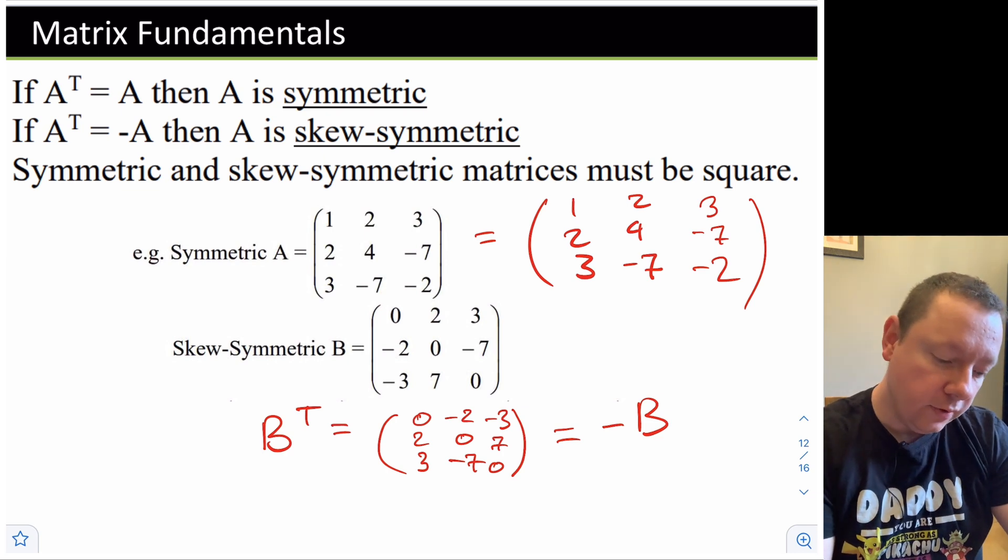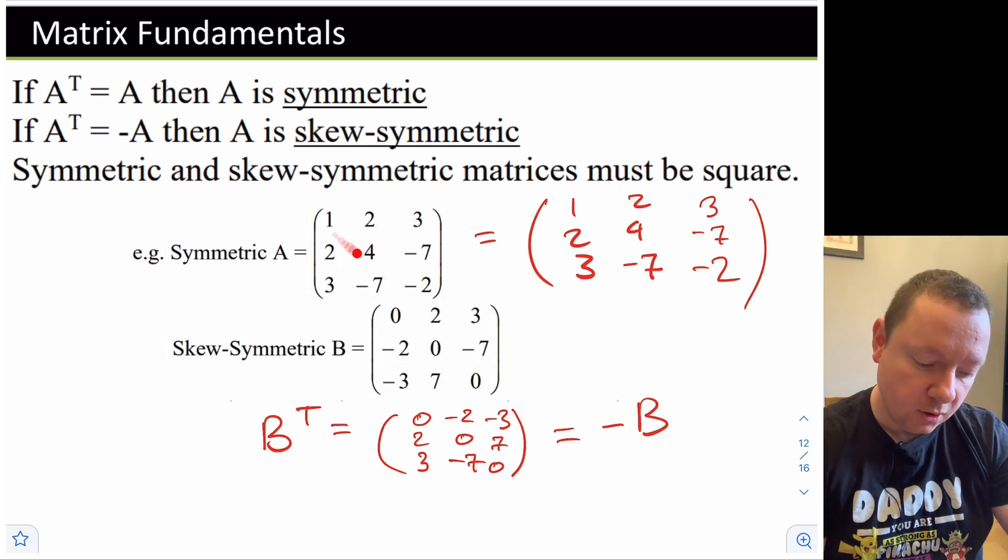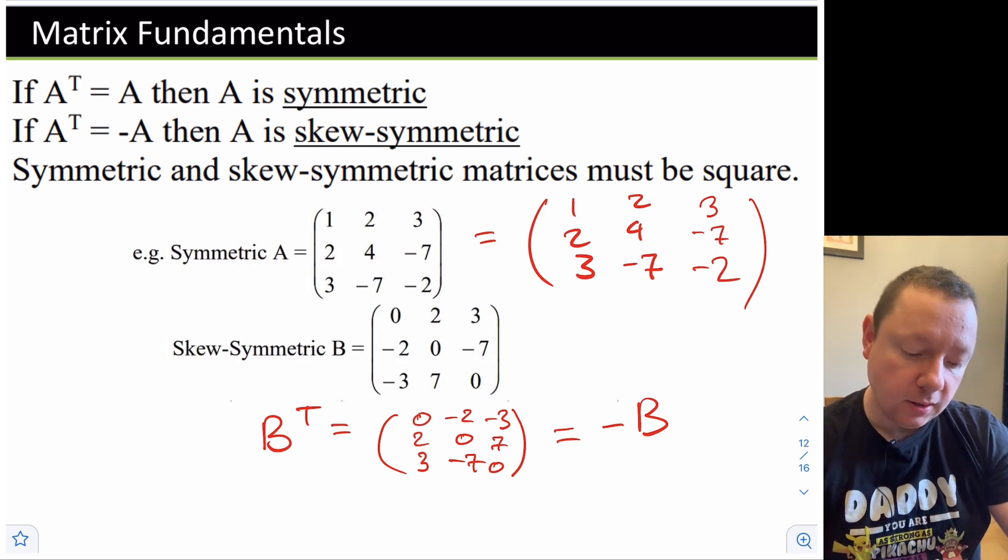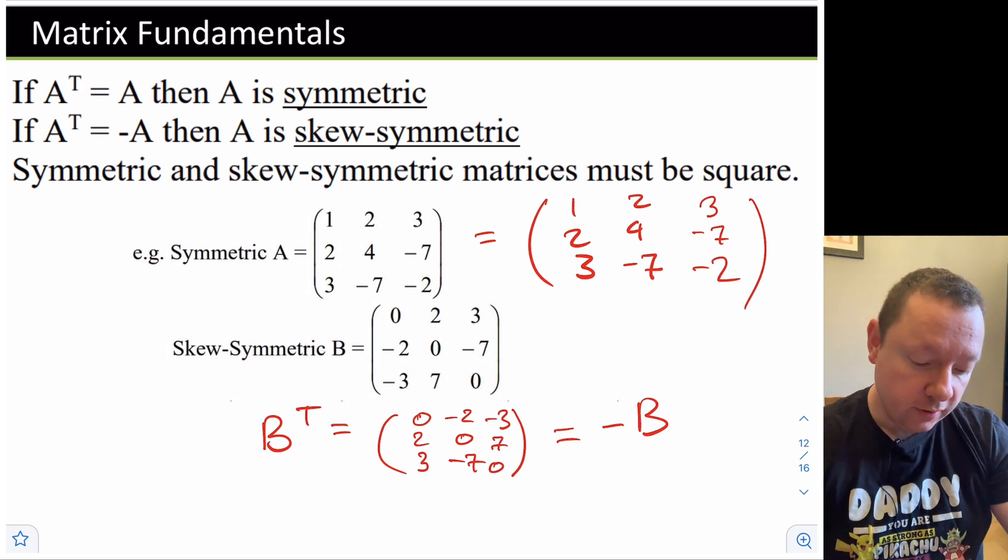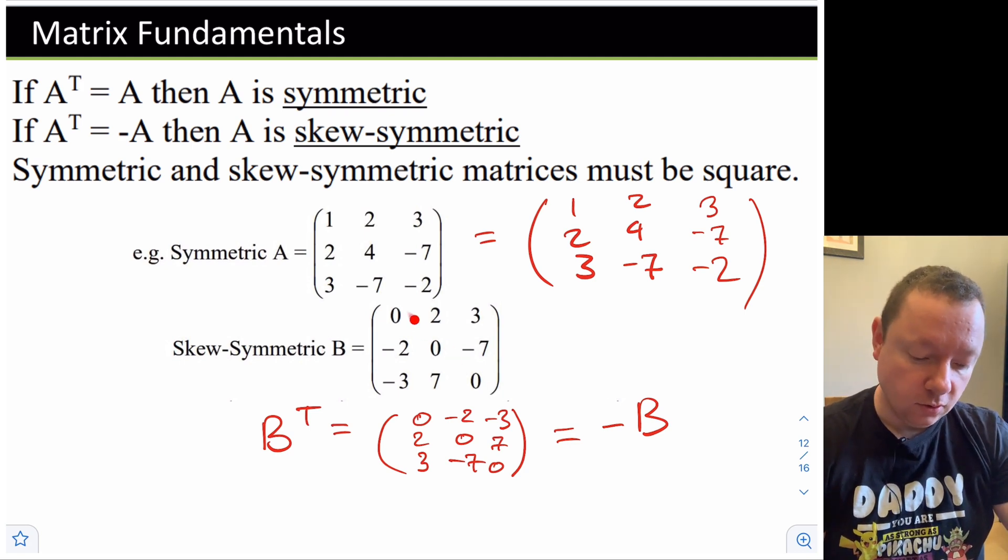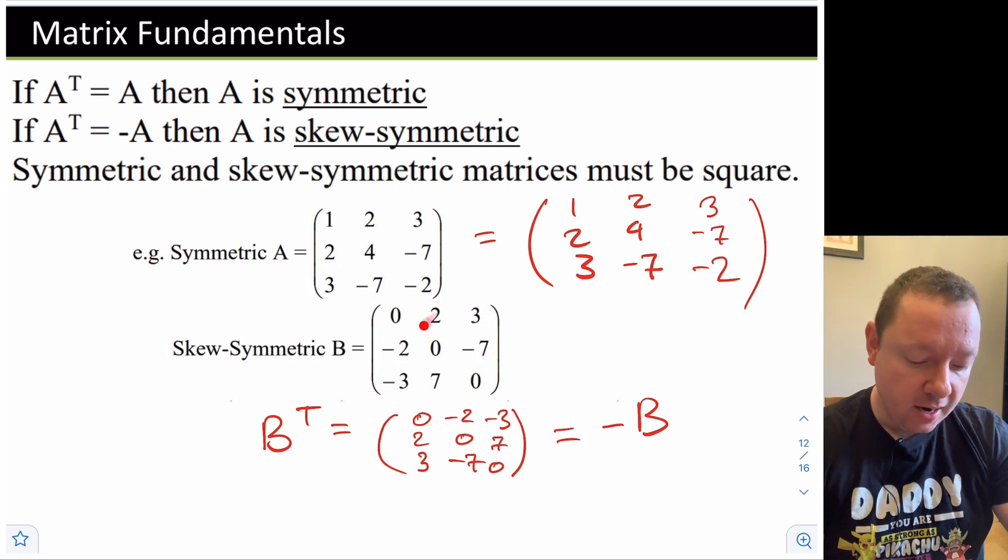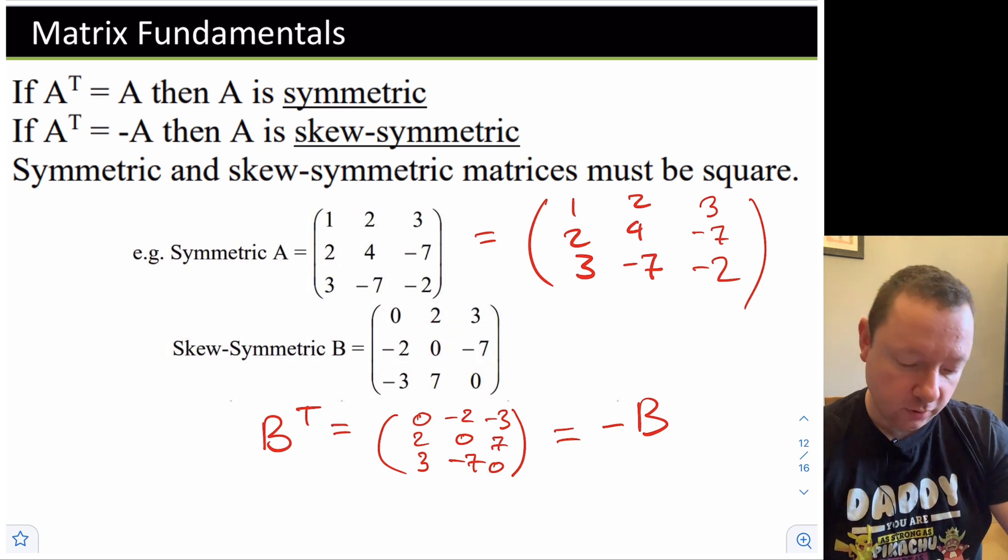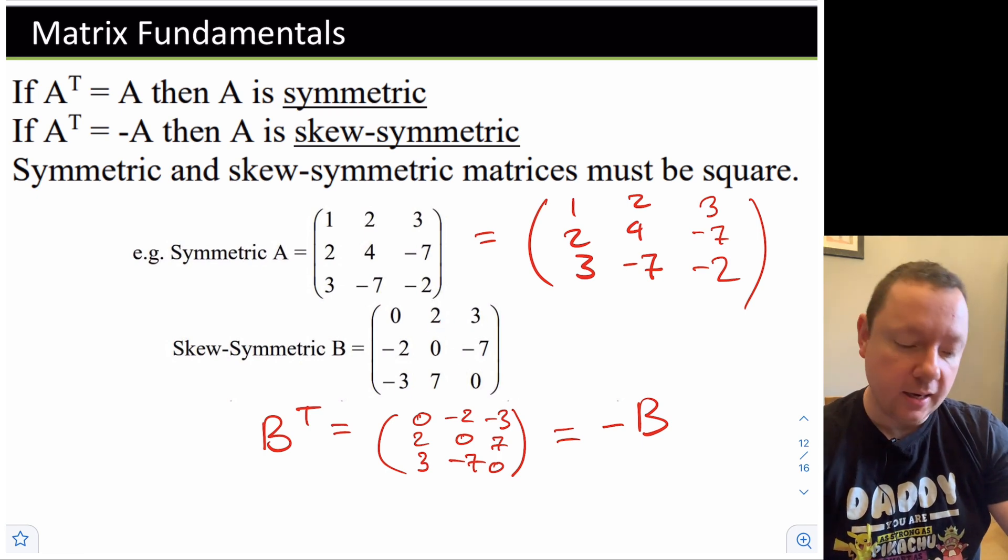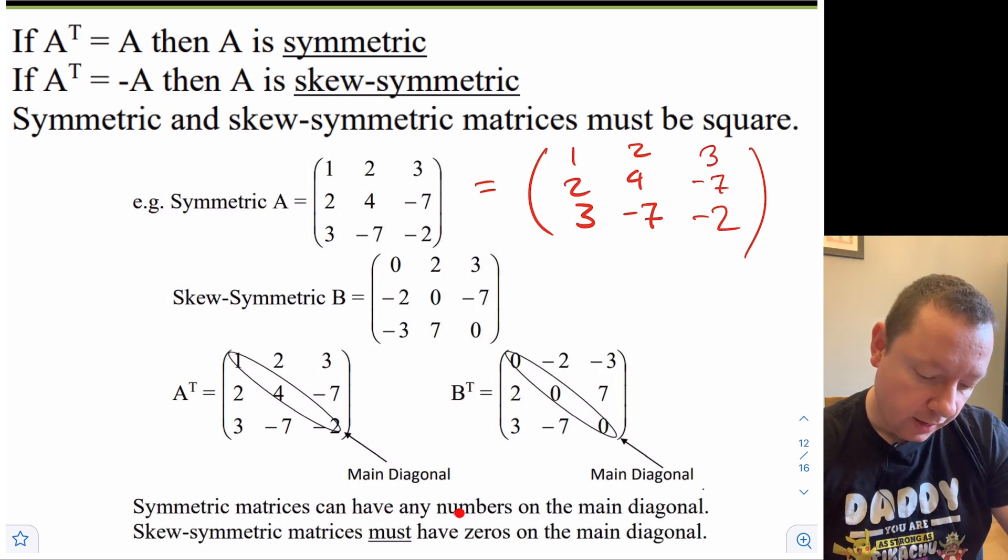A few other things to notice. If you look at the leading diagonal in the symmetrical matrix, there can be any numbers. It doesn't make much of a difference, but what does make a difference is across the diagonal, it's symmetric. Whereas if you look at a skew symmetric matrix, the leading diagonal is always filled with zeros. And in fact, if you look across the diagonal, the pairs of numbers are always the inverse of each other: 2 and -2, 3 and -3, -7 and 7. Let's formalize that idea. Symmetrical matrices can have any numbers in the main diagonal. However, skew symmetrical matrices must have zeros on the main diagonal.